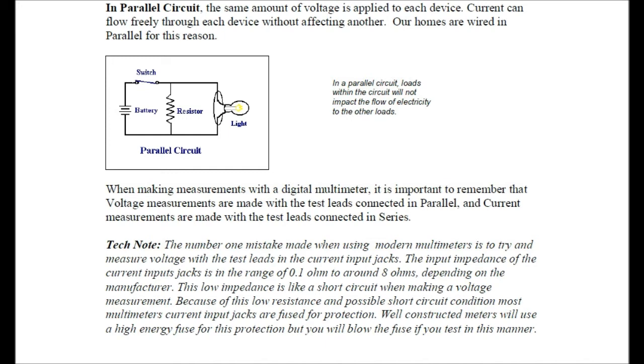Tech note. The number one mistake made when using modern multimeters is to try and measure voltage with the test leads in the current input jacks. The input impedance of the current input jacks is in the range of 0.1 ohms to around 8 ohms, depending on the manufacturer. The low impedance is like a short circuit when making a voltage measurement.